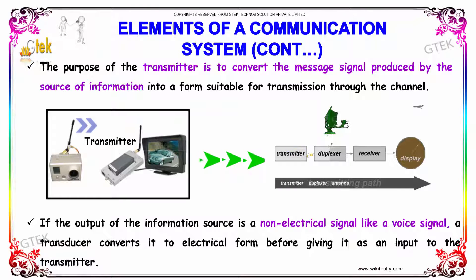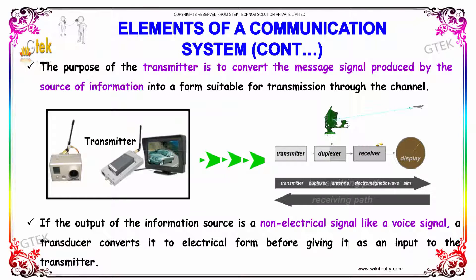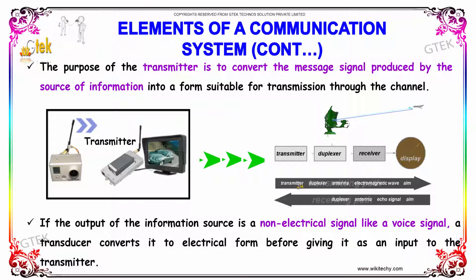You are able to see the transmitter — there is a duplexer and there is a receiver. This is the transmitting path and you are able to see the receiving path here.